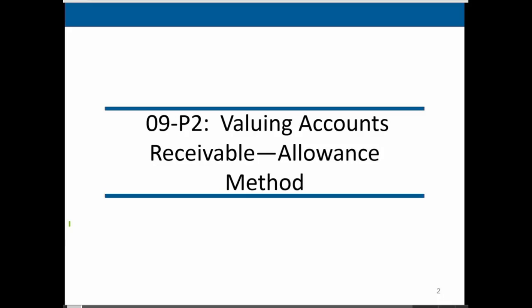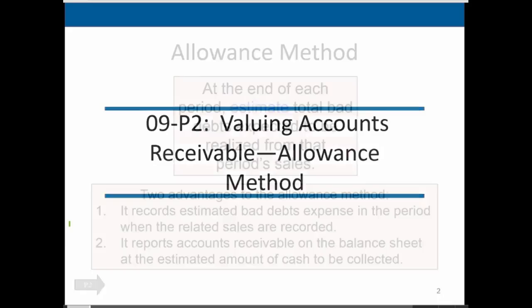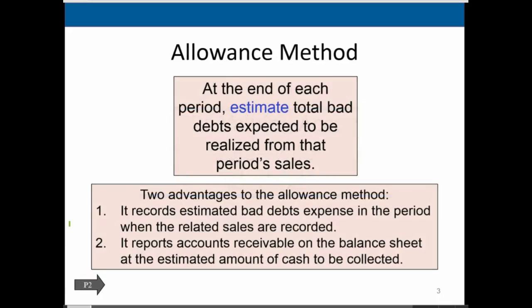The allowance method is the generally accepted principle. If the receivables and the bad debt is a significant number, then we need to make this estimate in order to be in accordance with generally accepted accounting principles. With the allowance method, at the end of each period, we estimate total bad debt expected to be realized from the period's sales.